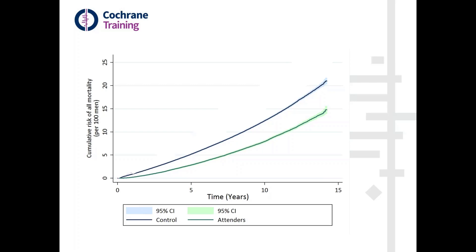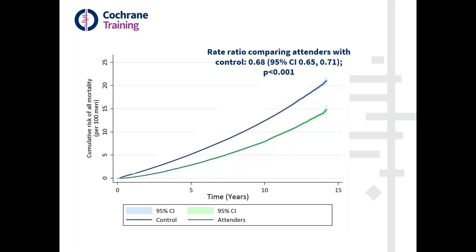This slide shows the effect comparing people in the control group in blue with people who attended for screening in green. We're looking at the cumulative risk of all-cause mortality. All-cause mortality was dramatically lower in people who attended screening — having been invited — compared to the controls who were never invited. The rate ratio comparing people who attended for screening with controls was 0.68, with a small p-value and a narrow confidence interval — 32% lower mortality in people who attended for screening.